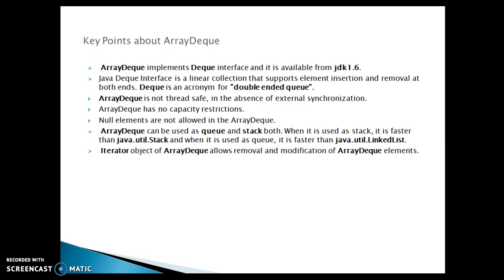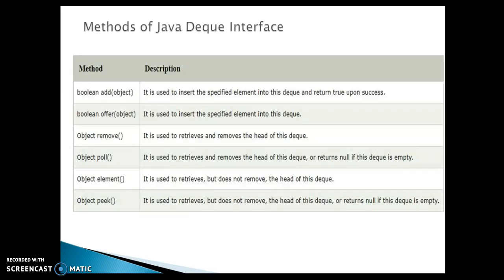The iterator object of ArrayDeque allows removal and modification of ArrayDeque elements. When we talk about the methods of the Java Deque interface, there are a few key methods. The add method is used to insert the specified element into the Deque and returns true upon success. The offer method is also used to insert the specified element into the Deque — it is very similar to the add method.